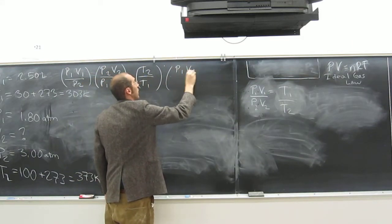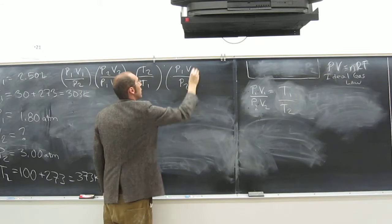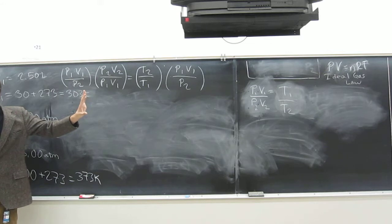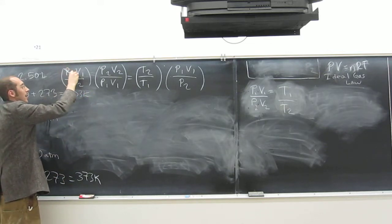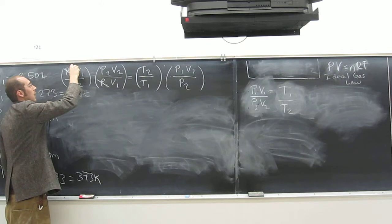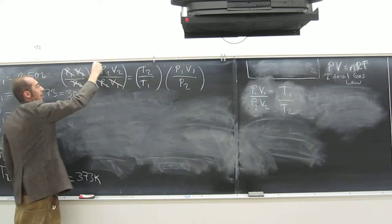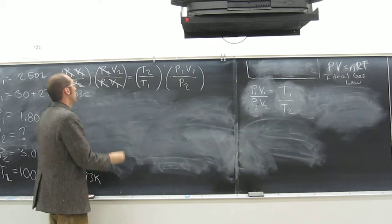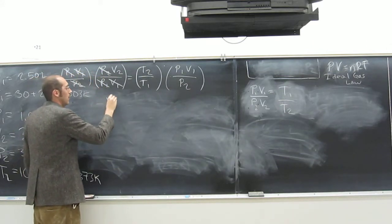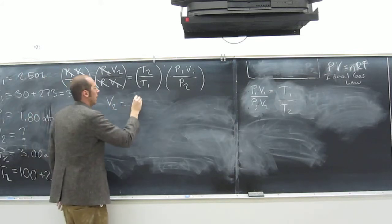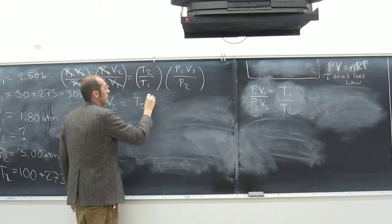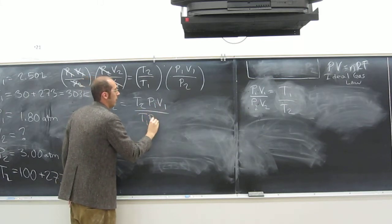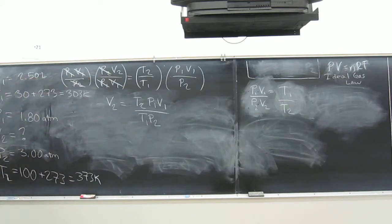So let's just do that. P1V1 over P2. Is everybody okay with doing that? Does everybody understand why we did that? So if we did that, we can cancel, cancel. V1 cancel, cancel. P2 cancel, cancel. Does anything cancel over here? No. So what's our new equation? V2 equals T2 P1 V1 divided by T1 P2. Is everybody cool with that?